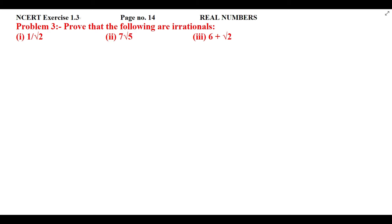Students, this is the NCERT exercise 1.3, problem number 3. Let's read the statement: Prove that the following are irrational. You have three problems given. First one is 1 by under root 2, second is 7 under root 5, and third is 6 plus under root 2. You have to prove that all three terms are irrational.